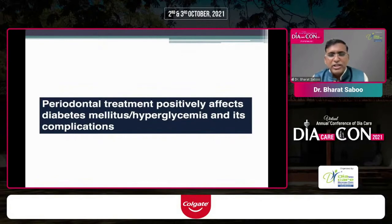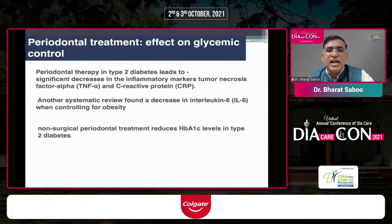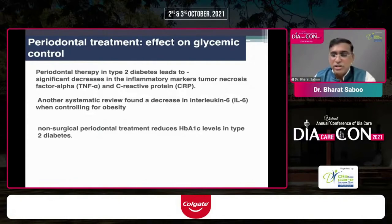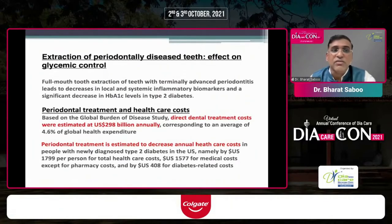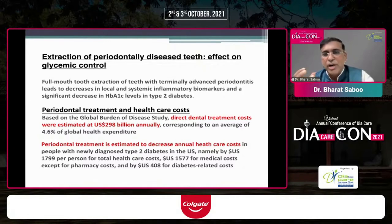Periodontal therapy in type 2 diabetes leads to a significant decrease in inflammatory markers TNF-alpha and CRP. Another review showed a decrease in IL-6 levels when controlling for obesity. Non-surgical periodontal treatment also reduces HbA1c — not only surgical treatment. Even full mouth extraction of terminally periodontitis-affected teeth leads to a decrease in systemic and local inflammatory biomarkers along with a decrease in A1C in type 2 diabetes.